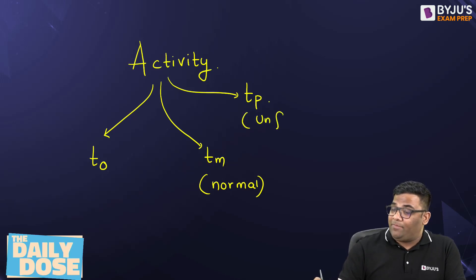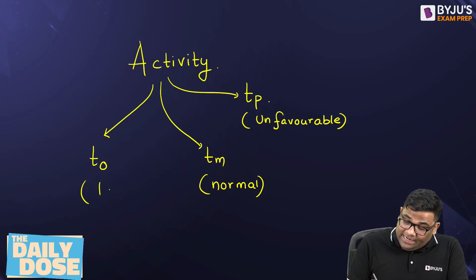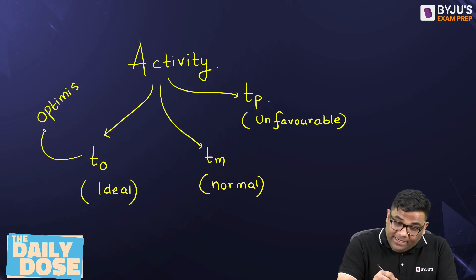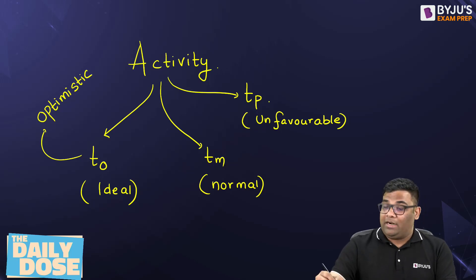So we can say that in unfavorable condition, I will get Tp, pessimistic. T0 is under ideal condition. Under ideal condition, I will take less time, right? So this is your optimistic. And this is your pessimistic.